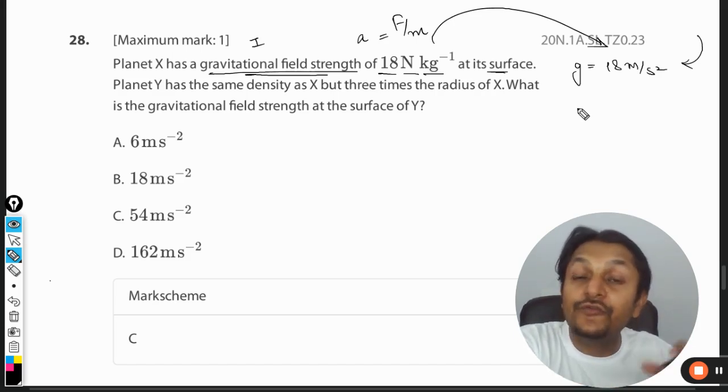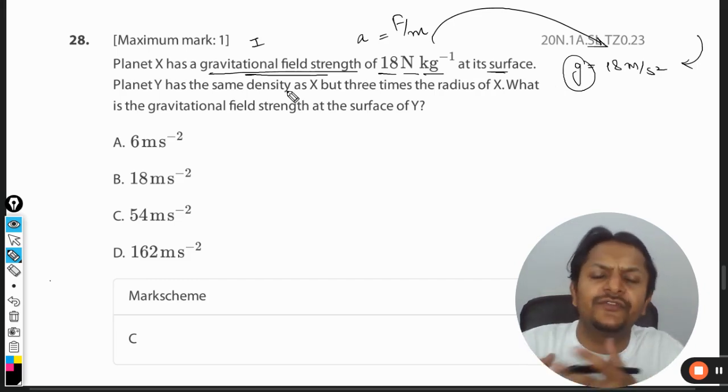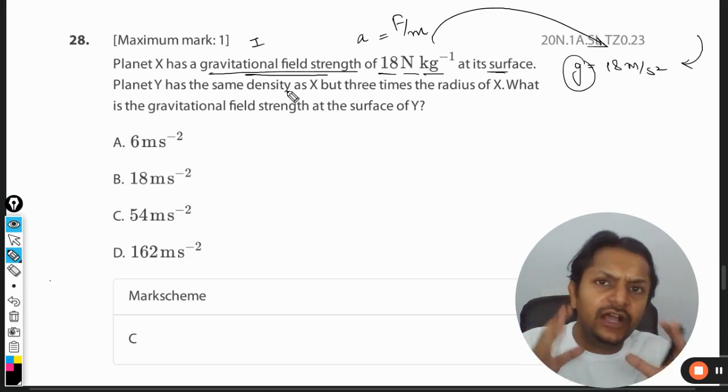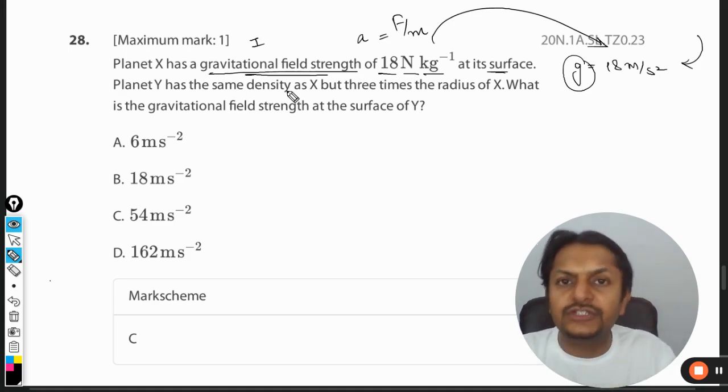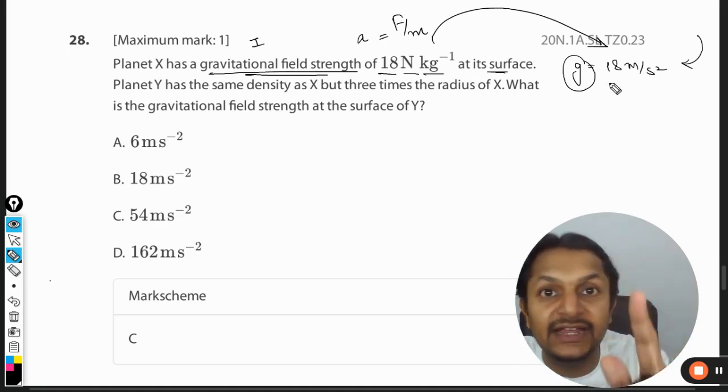But in IB physics books they are usually taken as the same. So the confusion increases—why is this thing happening? Why are you calling this acceleration due to gravity as gravitational field strength or gravitational field intensity? Should not these two things be different from each other? There are a couple of questions that come to the student's mind, but this is the explanation. So you can write it as 18 meter per second squared or 18 newton per kg.